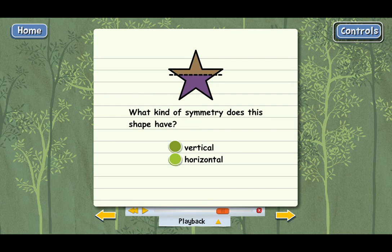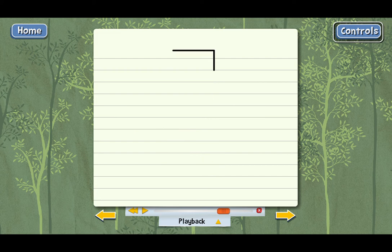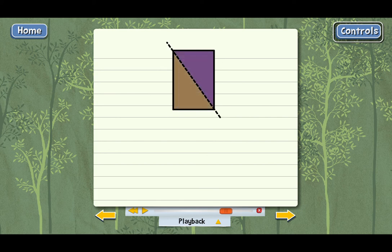Some figures have a line of symmetry that's not vertical or horizontal. Here's a rectangle again. And now watch this. This is a diagonal line, but it still cuts the figure into matching halves. See, these match up. And we could draw another line of symmetry here. These two are also matching halves. So this is also a line of symmetry.